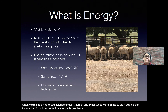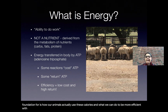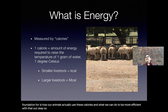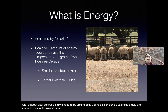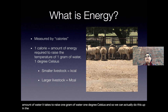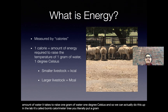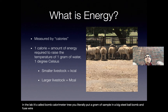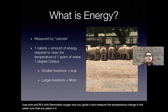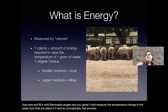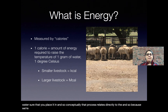First, we need to define a calorie. A calorie is simply the amount of energy it takes to raise one gram of water one degree Celsius. We can measure this in the lab using bomb calorimetry — you place a sample in a large steel bomb, add fuse wire, fill it with flammable oxygen, ignite it, and measure the temperature change in the surrounding water. That process directly relates to the definition of a calorie.